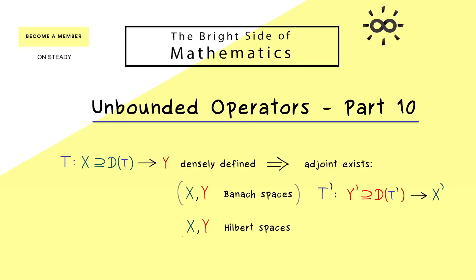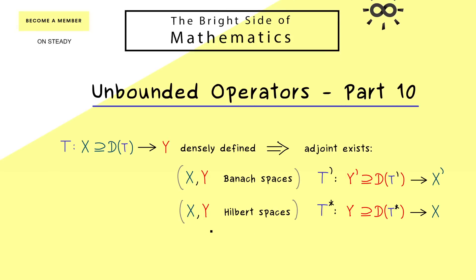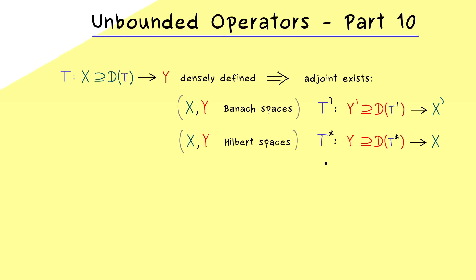Having Hilbert spaces is a special case of that, but then we can also write down a different adjoint — written with a star — which does not need the dual spaces at all. As we have seen, for Hilbert spaces these two notions are almost the same; they are just connected by an antilinear map given by the Riesz representation theorem. Therefore if we have Hilbert spaces, we usually just consider the adjoint T-star, and this is exactly what we will do here with the multiplication operator.